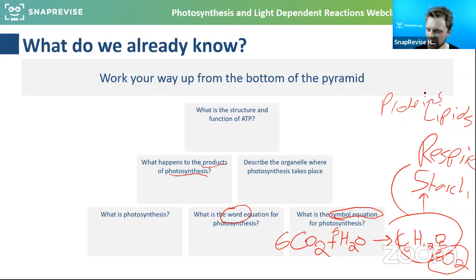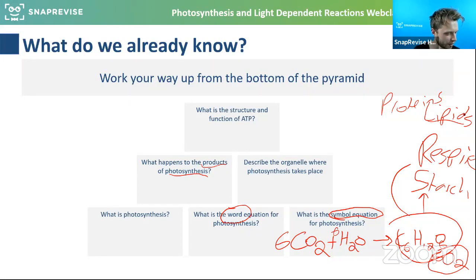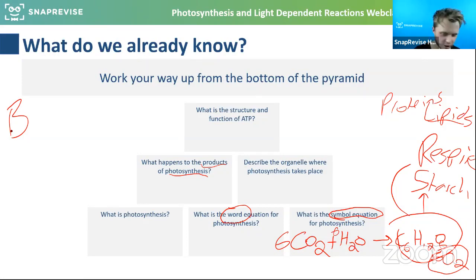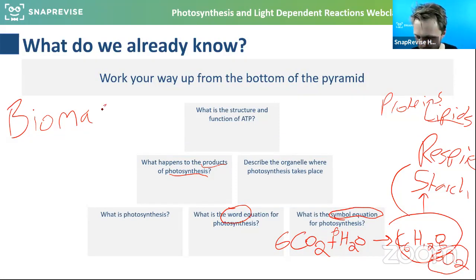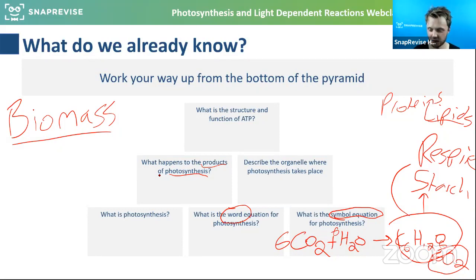So most — or a lot — of this glucose is turned into biomass. What happens to the products of photosynthesis? A lot of it is respired and some of it is turned into biomass.